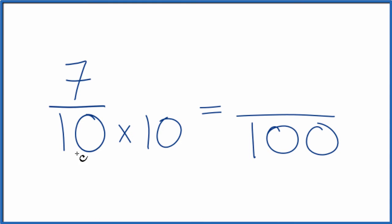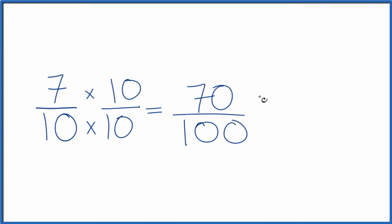But we can't just multiply the denominator. We also need to multiply the numerator by 10 as well. So 10 times 10, that's 70. And since we're multiplying by 10 over 10, that's just 1. We're not changing the value, just the way it's represented. So in this case, since we have a number over 100, we just call this 70%. That's the first way.